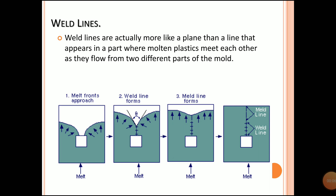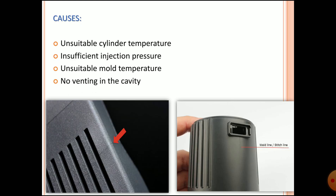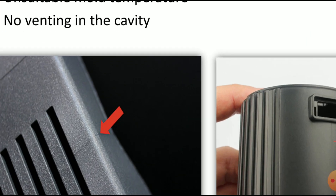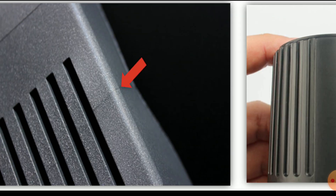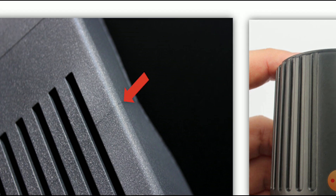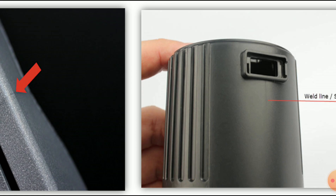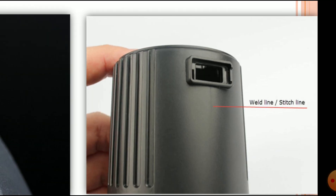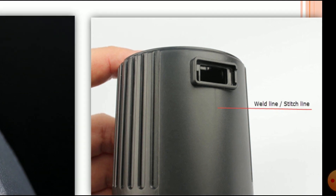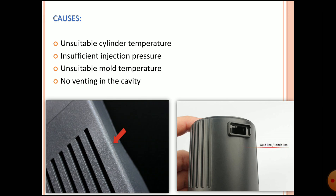The next defect is the weld line. Weld lines are actually more like a plane or a line that appears in the part where the molten plastic meets as it flows from two different parts of the mold, as you can see in the image. These weld lines appear on your part surface.